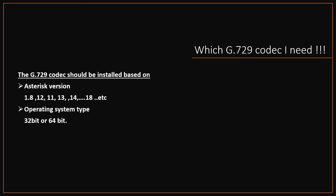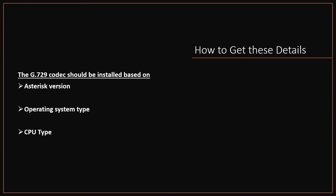The correct G729 depends on whether your system is 32-bit or 64-bit, and your CPU make — Intel, AMD, etc. To get these details: to know the installed Asterisk version, type 'asterisk -rx core show version'. For the operating system bit size, type 'uname -a'.